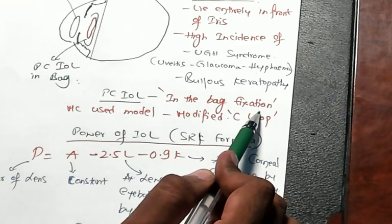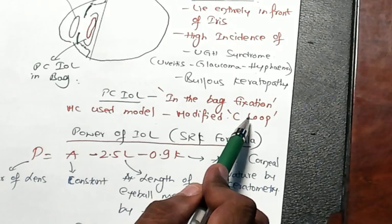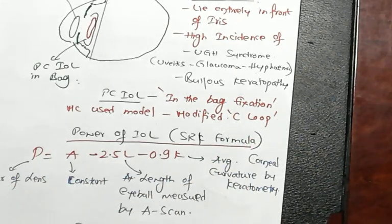Posterior chamber IOL typically you will put in the bag fixation technique, and the most common used model is modified C loop.